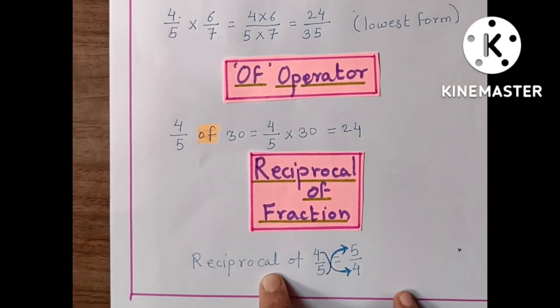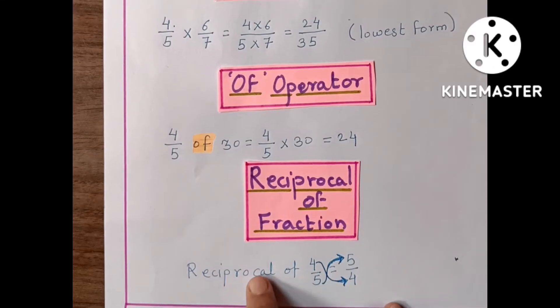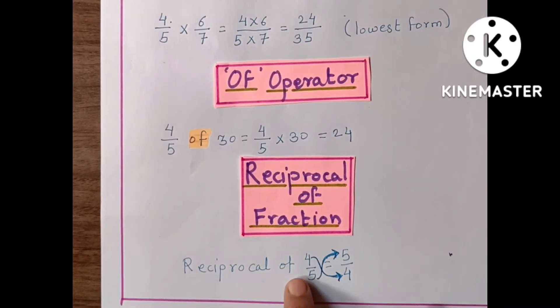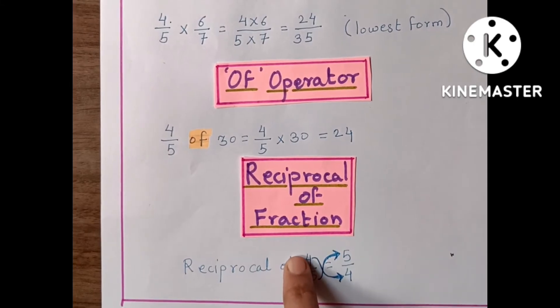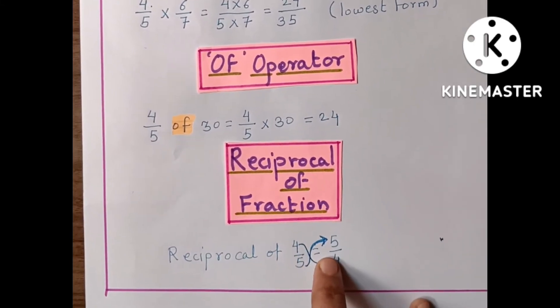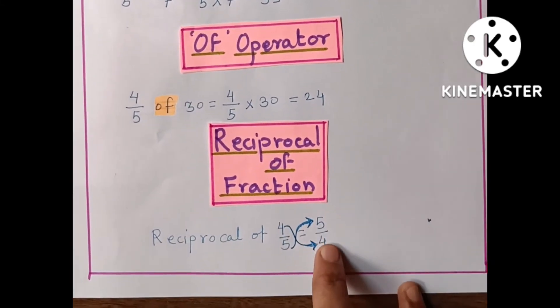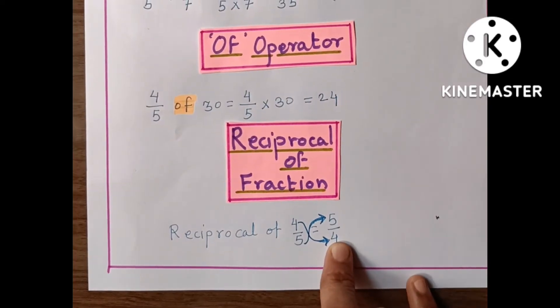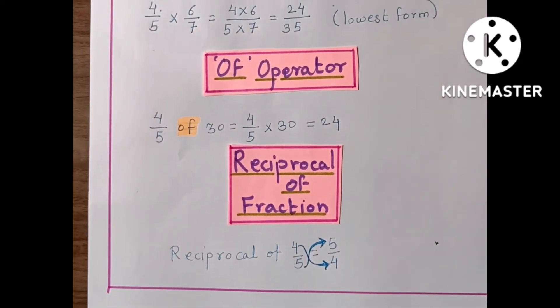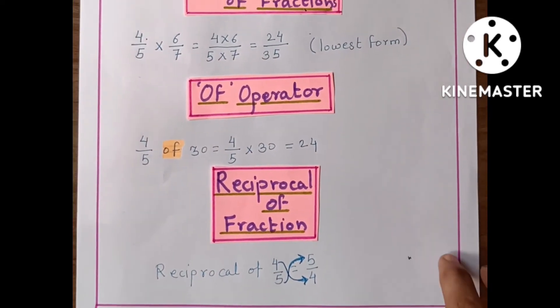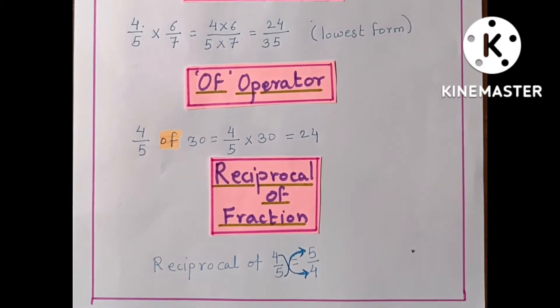Reciprocal means inverse. Here I inverse the number — 4 by 5 becomes equal to 5 by 4. Now let's see the next page.